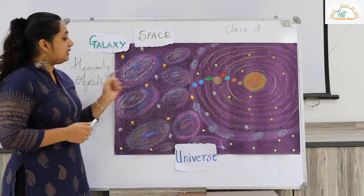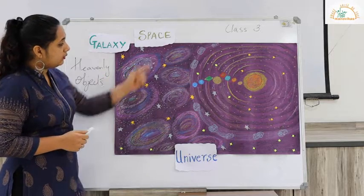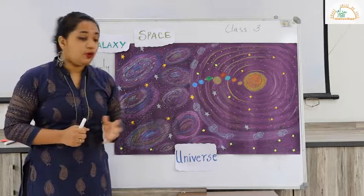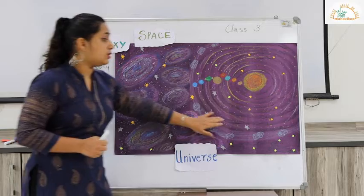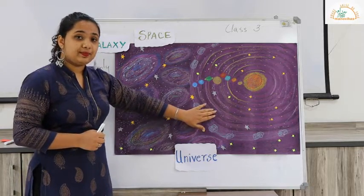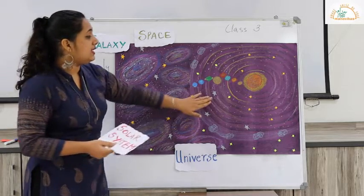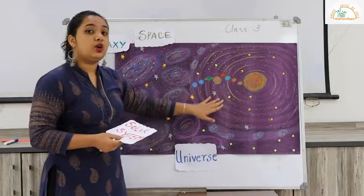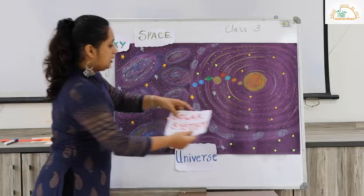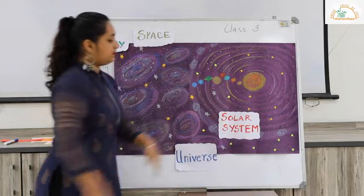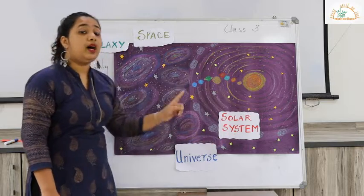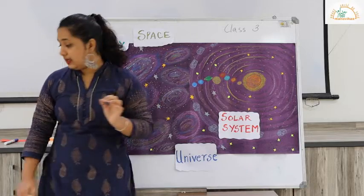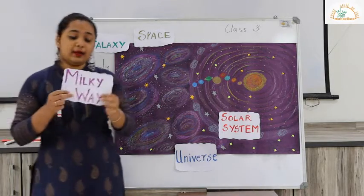Let us count a few galaxies now — approximately eight. But do you know our solar system is also a part of a galaxy? Our solar system consists of planets, the sun, stars, comets, asteroids and meteors. Now our solar system is a part of a galaxy, and the name of the galaxy to which our solar system belongs is called the Milky Way.